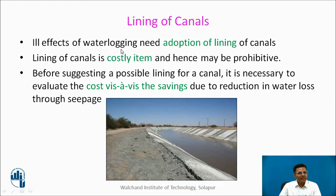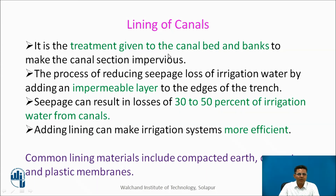The ill effects of water logging necessitate the adoption of canal lining. Canal lining is a costly affair, but economic analysis shows the advantages outweigh the cost. Lining is a treatment given to the canal bed and banks, making an impermeable layer along both. Seepage losses of 30 to 50% in unlined canals can be reduced to just 2 to 5% with lining, making irrigation systems more efficient. Common lining materials include compacted earth, cement concrete, and plastic membranes.